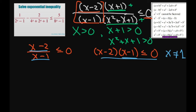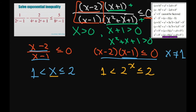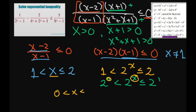Therefore, our big X is between 1 and 2 — it can't equal 1 but can equal 2. So we have 1 less than 2 to the power of x, less than or equal to 2. We can rewrite 1 as 2 to the power of 0 and 2 as 2 to the power of 1. Looking at the exponents, our solution is 0 less than x less than or equal to 1. The reason x cannot equal 0 is that it would make the denominator 0. Thank you, have a nice day.